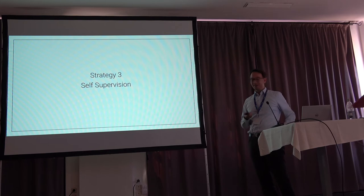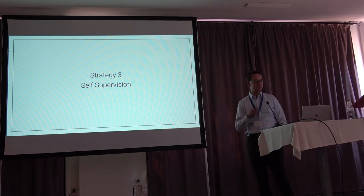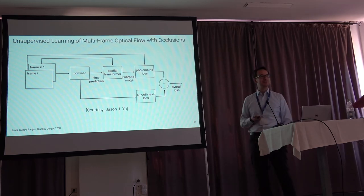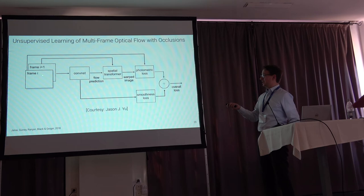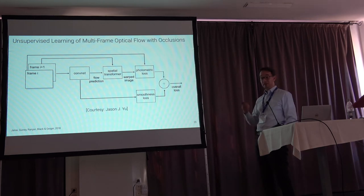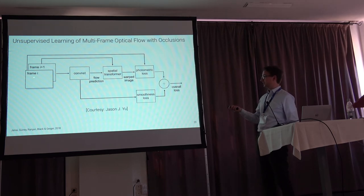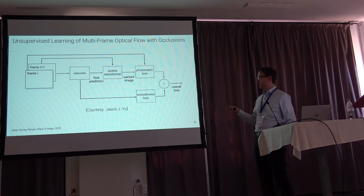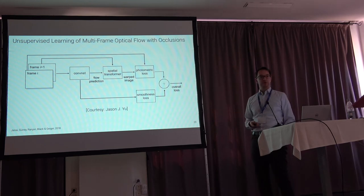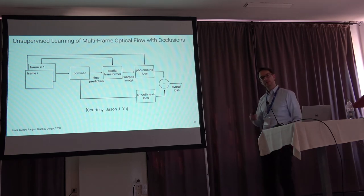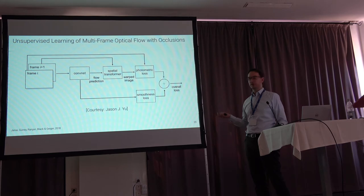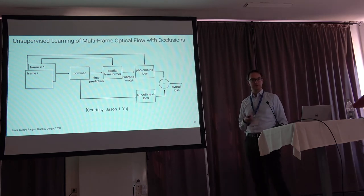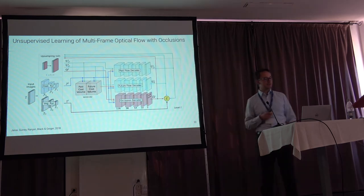Strategy three is self-supervision, which was also mentioned in Stefan's talk. If you want to estimate optical flow where we really don't have ground truth in real-world conditions, you can take frames, put them through a network — the optical flow predictor — warp the images according to the estimated flow, and apply a photometric loss function on the warped image. This is essentially a classical optical flow formulation, but with a loss function rather than an energy. A smoothness loss is also needed to avoid the aperture problem.